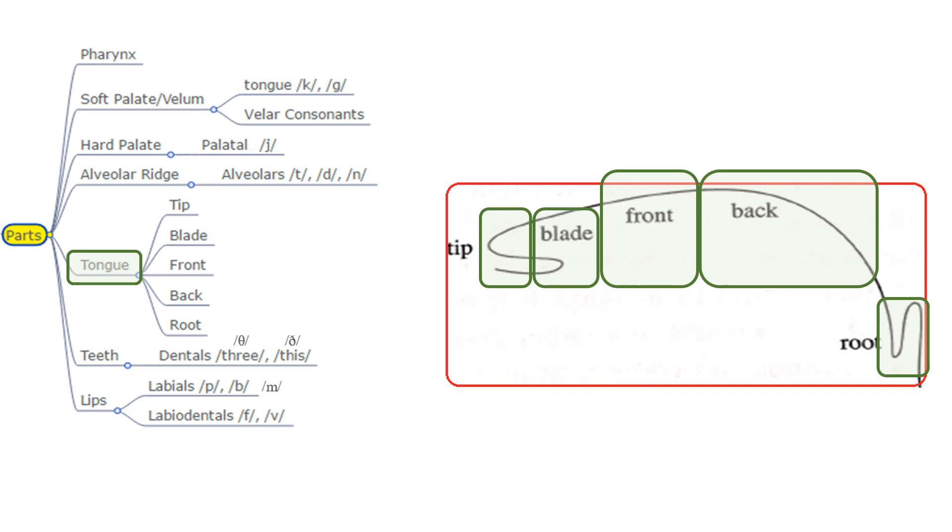The tongue, the most important articulator. It is divided into four main parts: the tip, the blade, the back and the root. There is no definite dividing line between these parts, just an approximation.